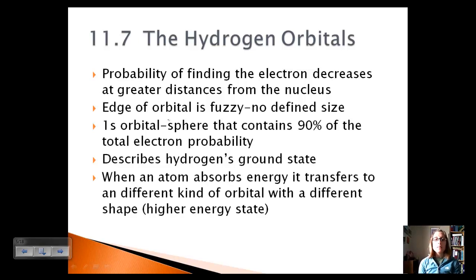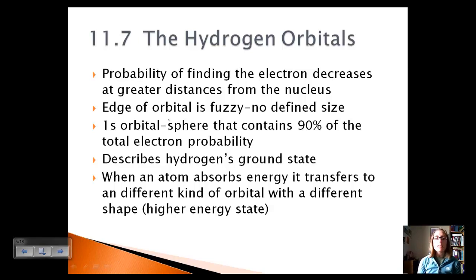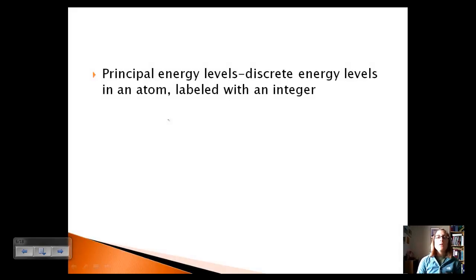When an atom absorbs energy, it transfers to a different kind of orbital with a different shape, going to a higher energy state. Unlike the Bohr model where the electron just jumped to a different orbit, here we go to a different orbital — which means a different amount of energy, a different shape, a different letter designation, all kinds of differences.